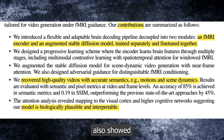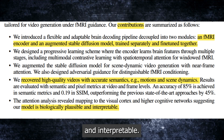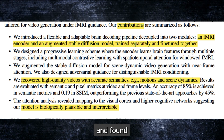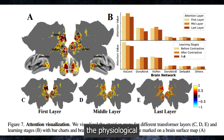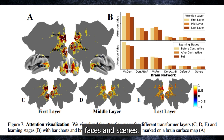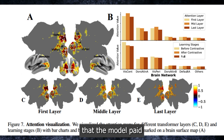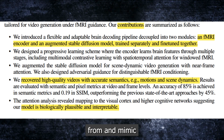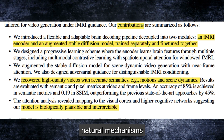The researchers also showed that their model is biologically plausible and interpretable. They visualized the attention maps of the model and found that it matched the physiological processes of the brain. For example, the model paid more attention to the regions of the brain that are known to be involved in processing motion, faces, and scenes. They also found that the model paid more attention to the parts of video frames most relevant to the content, suggesting that Mind Video can learn from and mimic natural mechanisms of human vision.